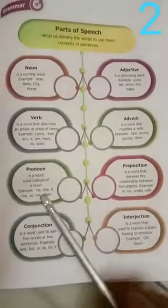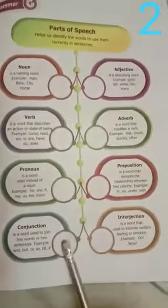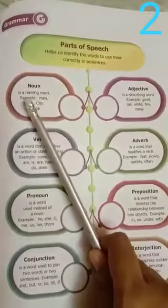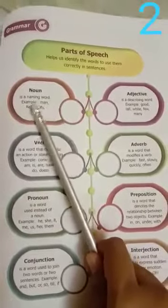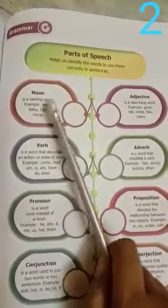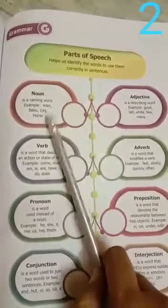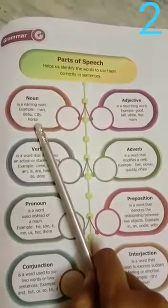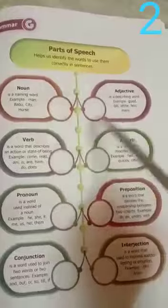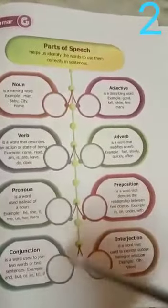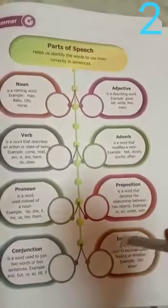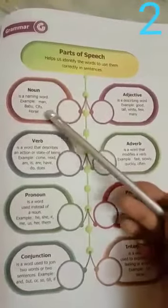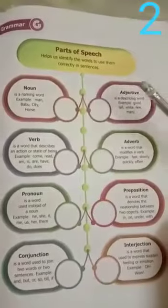Here is the definition of each part of speech. The first one is noun — it is a naming word. Examples: man, Babu, city, horse. A noun is the name of a person, place, animal, or thing. We have eight parts of speech in total. In this section, let me clarify the first one and then we will move on to the next one.